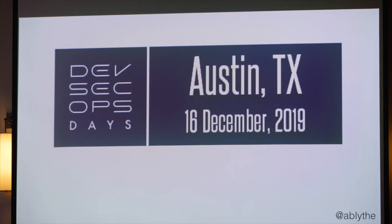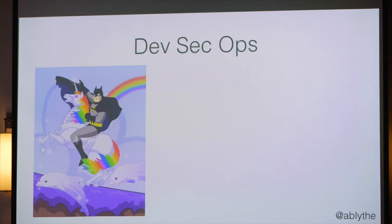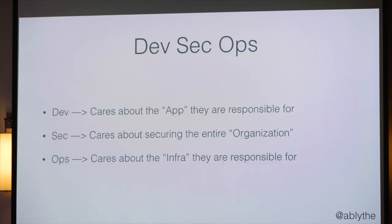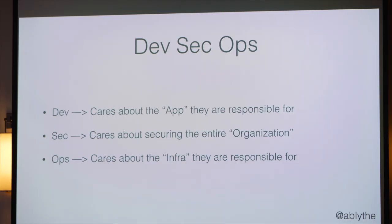This is a conference about DevSecOps, so I'm going to break this down into three use cases. Usually we think of DevSecOps a certain way, but in actuality it's probably a little different. The three use cases are Dev, Sec, and Ops. A Dev cares about the app they're responsible for, Sec cares about securing the entire organization, and Ops cares about the infrastructure they're responsible for.